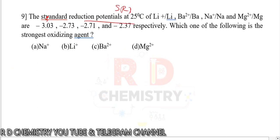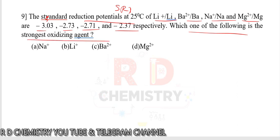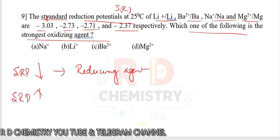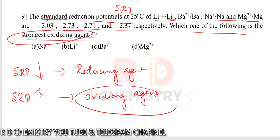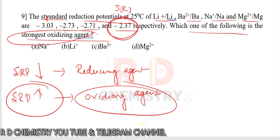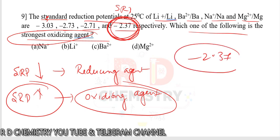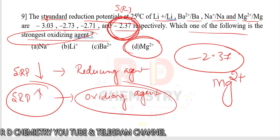Question 9. SRP values are given for lithium, barium, sodium, and magnesium as negative values. A very low SRP means a strong reducing agent; as SRP increases, the species becomes a stronger oxidizing agent. For the strongest oxidizing agent, we need the largest (least negative) value. Among the negative numbers, -2.37 is the largest, corresponding to magnesium. So Mg2+ is the strongest oxidizing agent. The answer is option D.